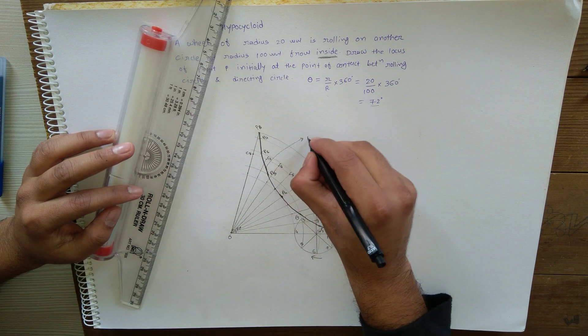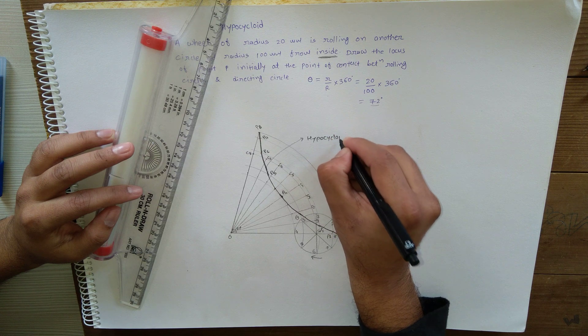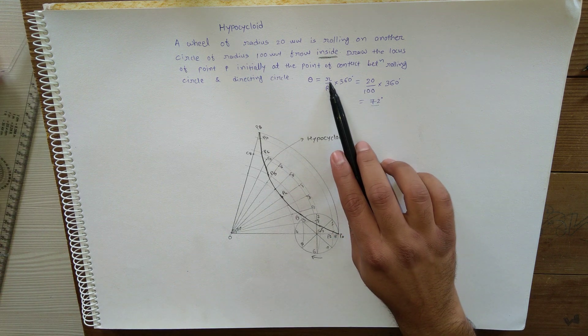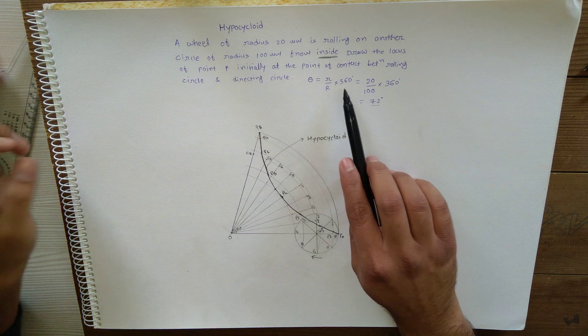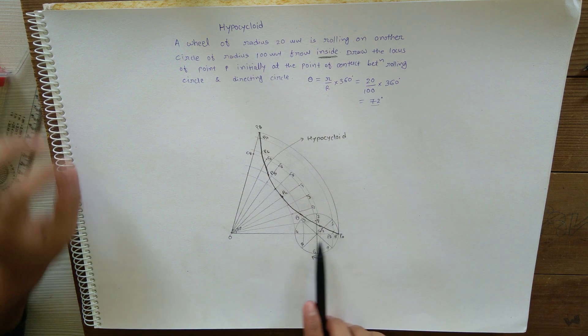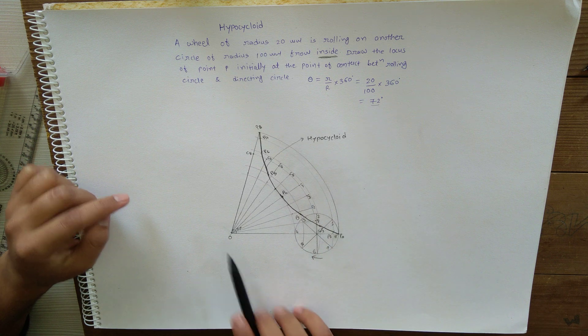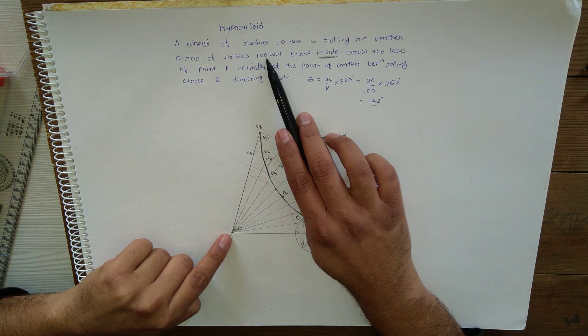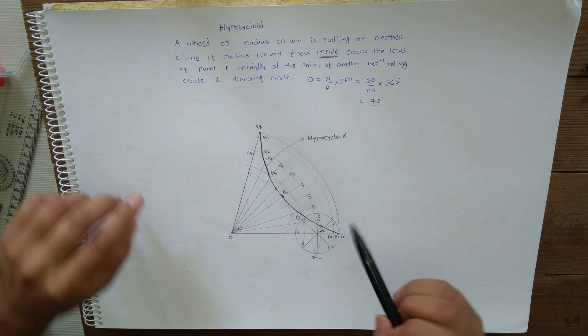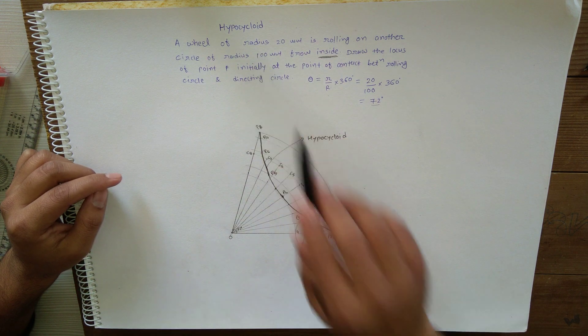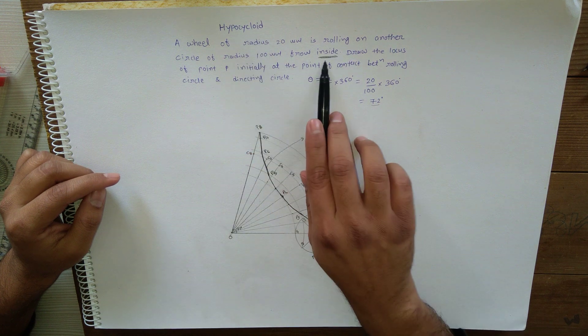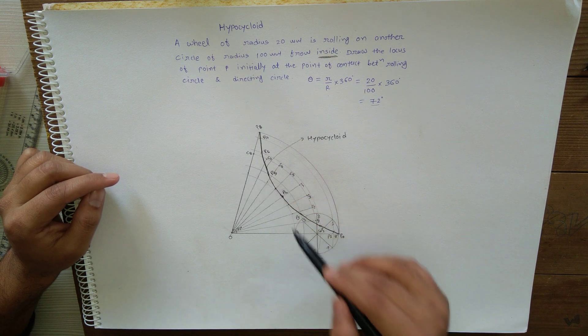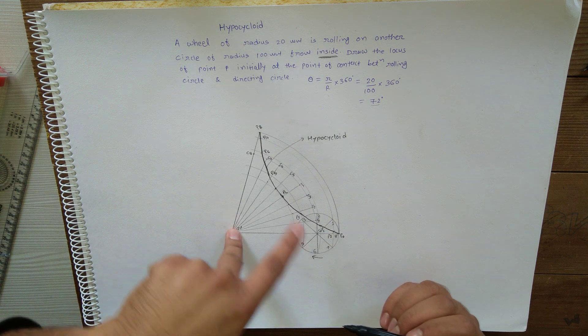I'll repeat the entire procedure once again. First of all, from the given data, calculate theta angle, which is smaller rolling circle radius divided by directing circle radius into 360. Whatever angle you are getting, draw two lines at the same angle. The length of the line should be equal to radius of the directing circle. Then draw arc, then draw rolling circle inside it, because this is the curve hypocycloid. That is why inside of that arc draw another circle which is the rolling circle. Then divide that rolling circle into eight equal parts, then divide this angle into eight equal parts, then draw arc from each and every point.